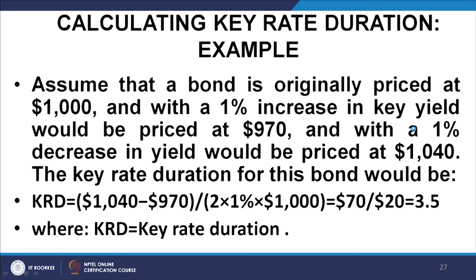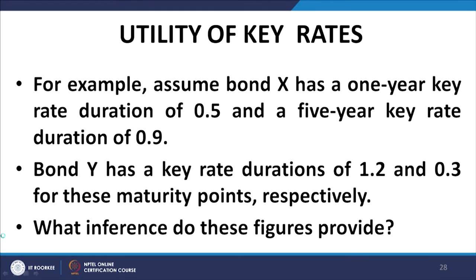Illustrating the utility of key rates: Bond X has a 1-year key rate duration of 0.5 and a 5-year key rate duration of 0.9. Bond Y has a 1-year key rate duration of 1.2 and a 5-year key rate duration of 0.3. Bond Y is almost twice as sensitive as bond X at the short end of the yield curve, while bond X is almost three times as sensitive as bond Y at the long end.